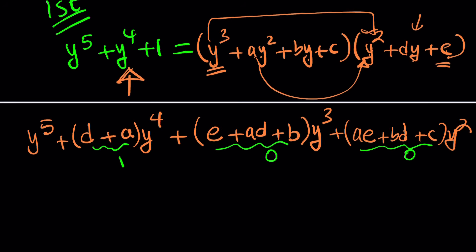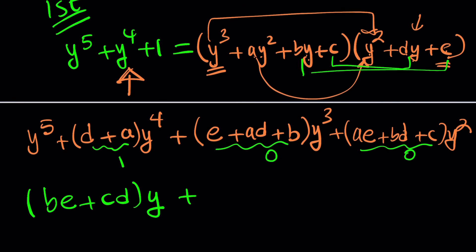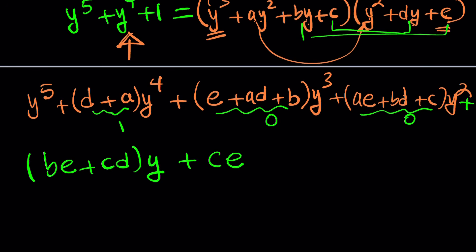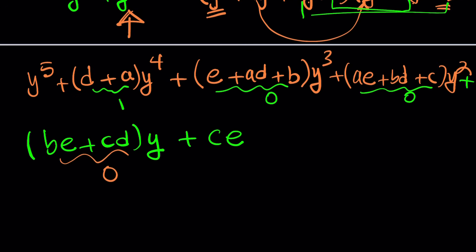Where does y come from? Y comes from by times e, giving be, and another y from c times dy, giving cd. Those are the only y terms. And then finally the constant, which is one, comes from c times e only. So now comparing all coefficients you get a system: d plus a equals one, e plus ad plus b equals zero, ae plus bd plus c equals zero, be plus cd equals zero, and ce equals one. If c and e are integers, you can guess they're 1 and 1 or negative 1 and negative 1. Plugging in and solving the system — where a, b, c, d, e are integers — is a bit painful but leads to the factorization.